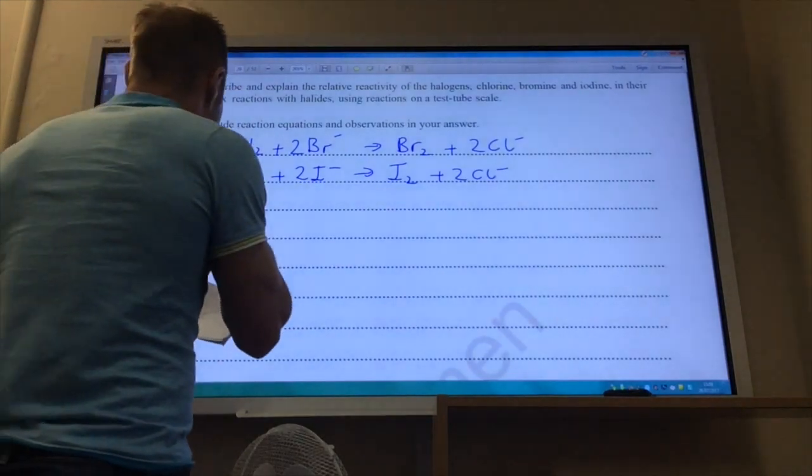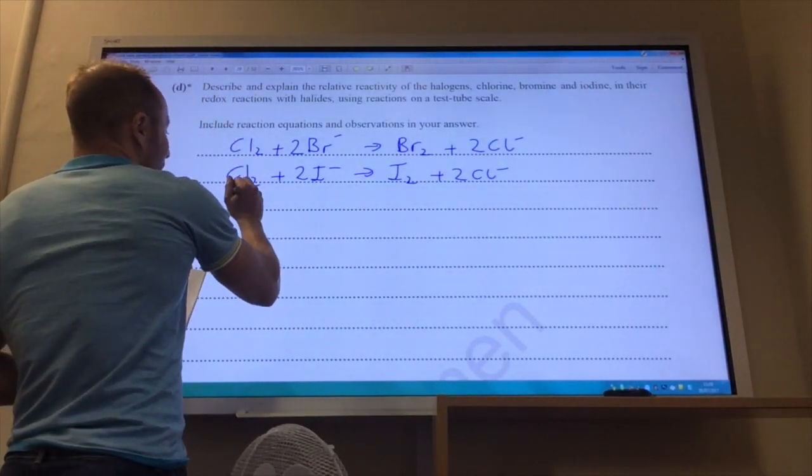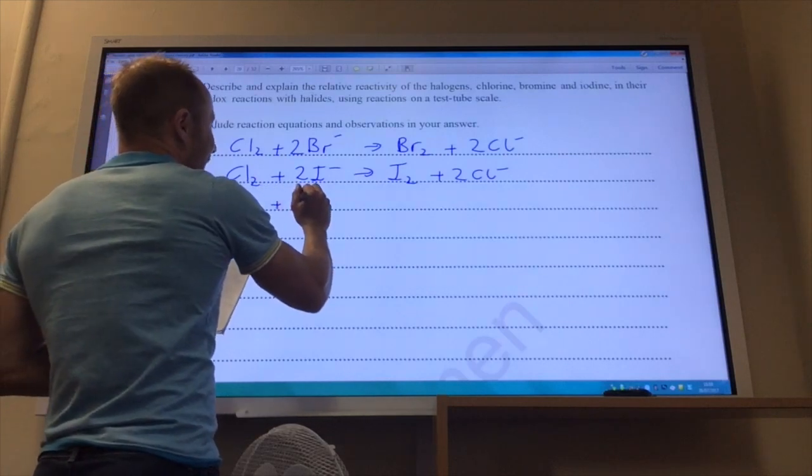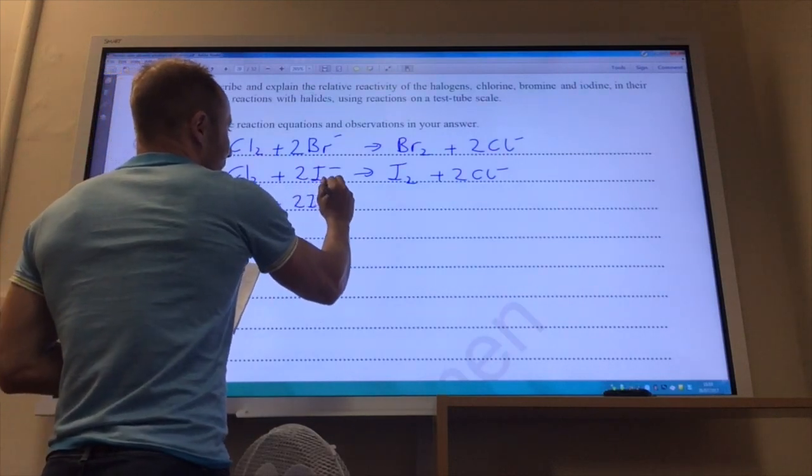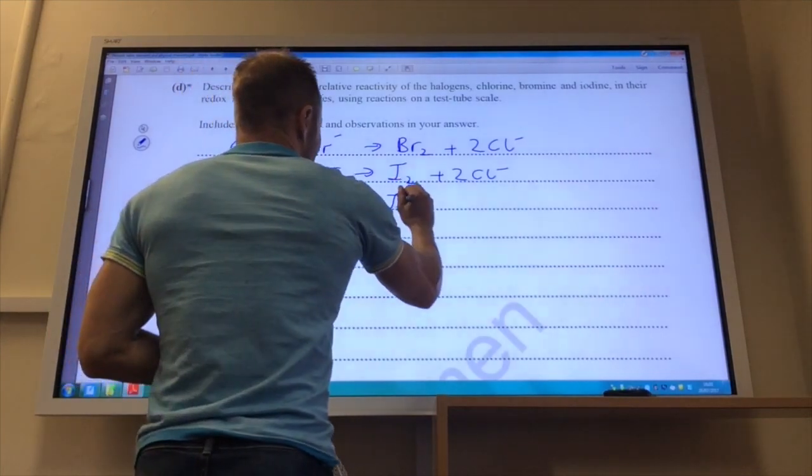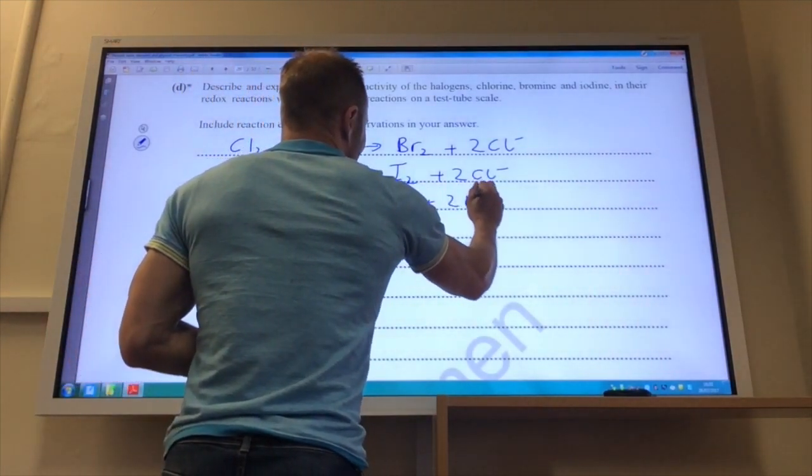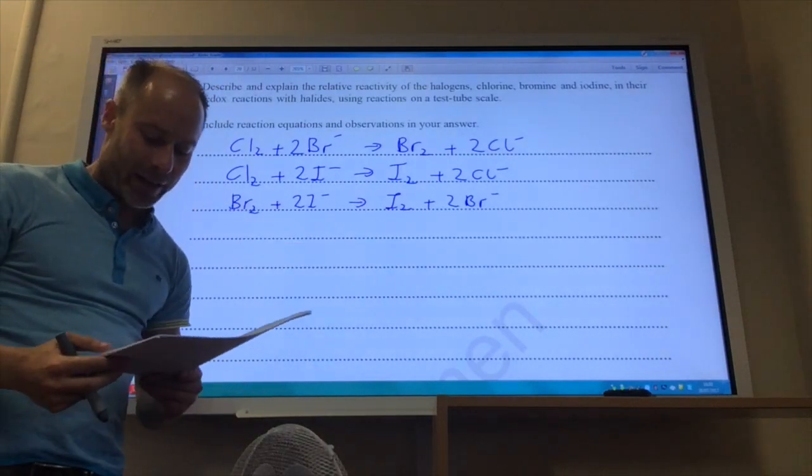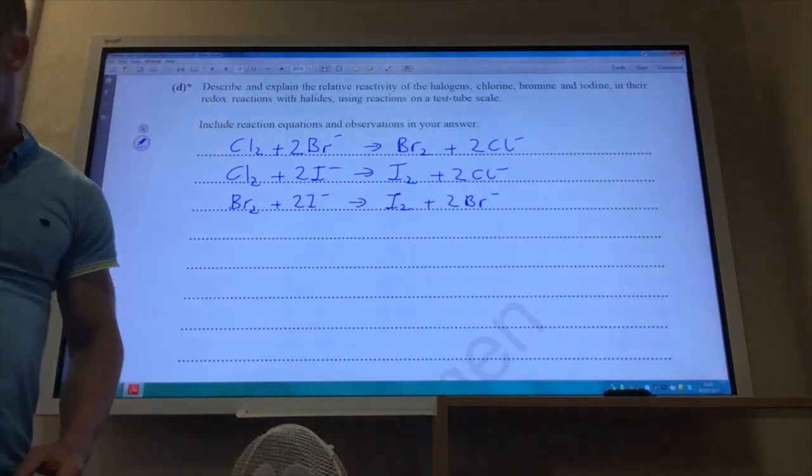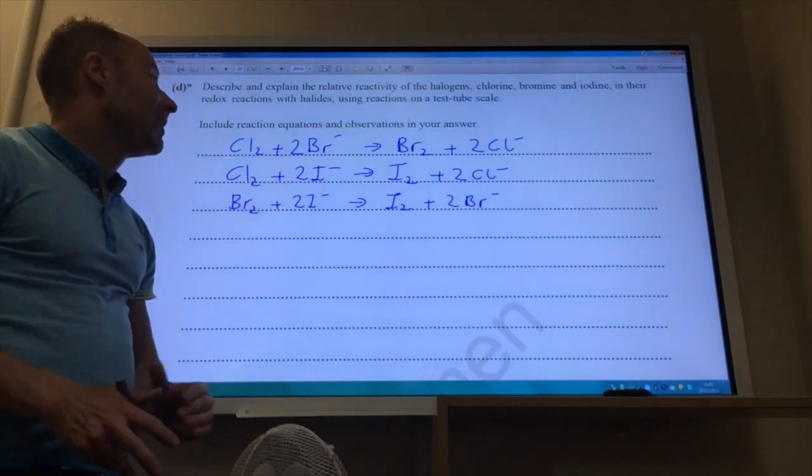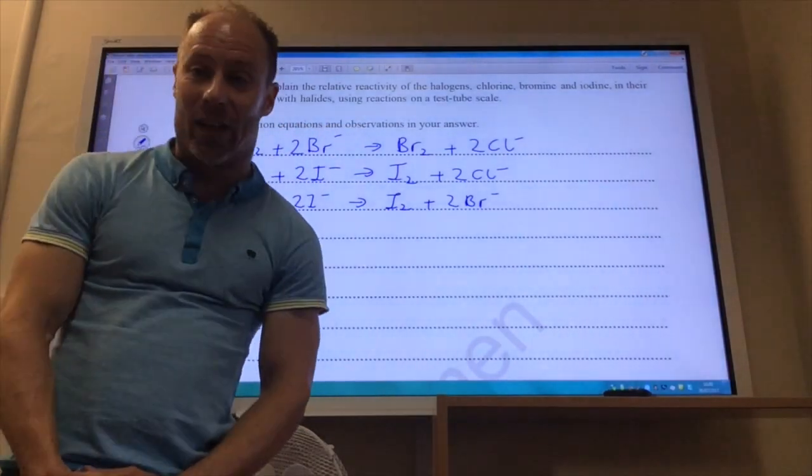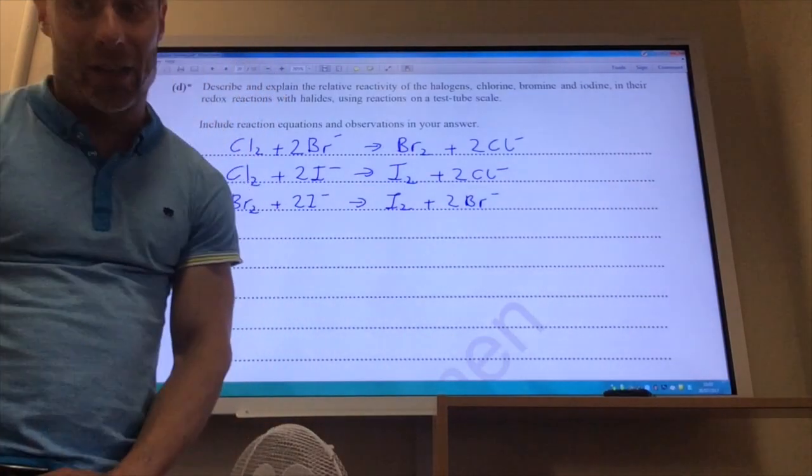OK, and then the final one that you could put is Br2 reacting with 2 I minus to give you I2 plus 2 Br minus. And again, you would see a dark orange precipitate of iodine appearing. And that's because a more reactive halogen displaces a less reactive halide from its compound.